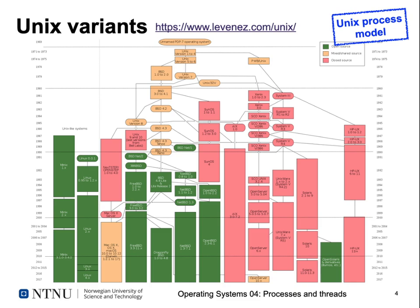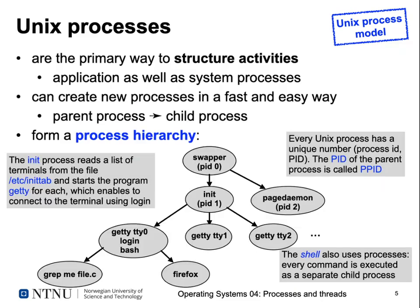What is common between all Unix systems is that they follow certain principles and abstractions — whether you run a commercial Unix like Solaris or Mac OS X, a free open-source Unix-like system like Linux, or Unix-derived free systems like NetBSD or FreeBSD. Unix processes serve as the primary way to structure activities currently going on in your computer — these can be application processes like your text processor, compiler, or video player.